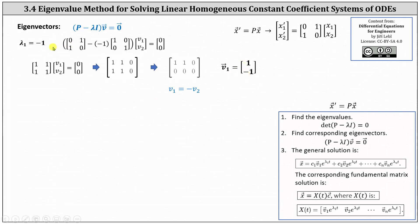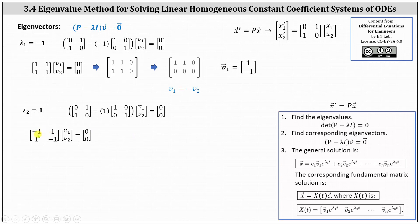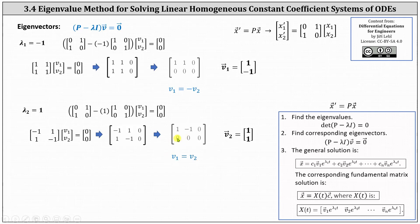For lambda sub two equals positive one, simplifying inside the parentheses, we have the two by two matrix where in the first row we have negative one, one, and in the second row we have one, negative one, times vector v equals a zero vector. The augmented matrix in reduced row echelon form has a row of zeros, where row one indicates v one minus v two equals zero, or v one equals v two. With v two as a free variable, we let v one and v two both equal one, giving us eigenvector v two equal to the vector [1, 1].